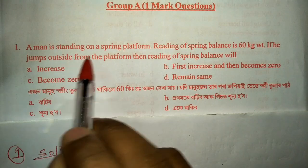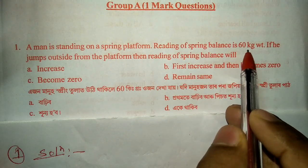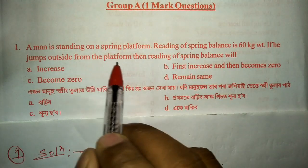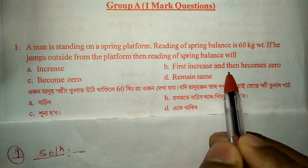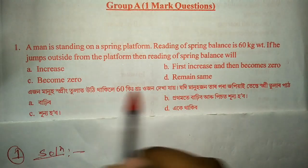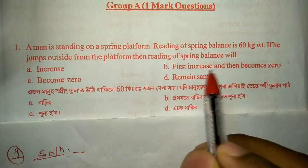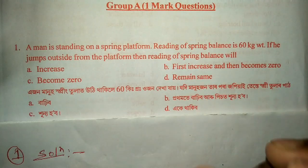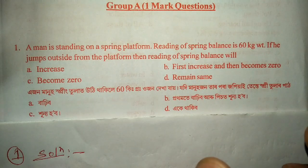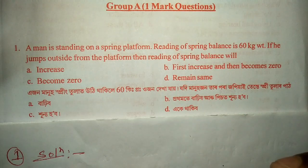Question number one: a man is standing on a spring platform and the reading of the spring balance is 60 kg. If he jumps outside from the platform, what will the reading of the spring balance become? When you jump, you put extra pressure on the spring balance for a moment, so the weight will first increase, and after that it will become zero. The correct option is B.